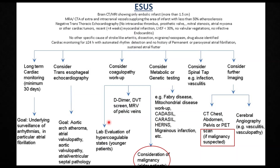One source is a cardiac source — you perform transthoracic echocardiography, and if nothing is found, long-term cardiac monitoring. You can also consider transesophageal echocardiography, metabolic and genetic tests in younger individuals, and spinal tap if suspecting infection or vasculitis. In older patients, a hypercoagulable workup including D-dimer and DVT screen is important, and malignancy must be considered as a top priority.